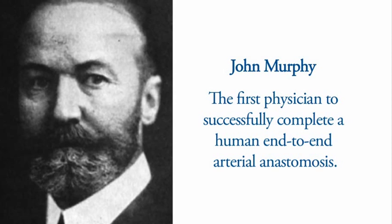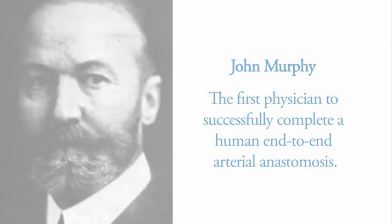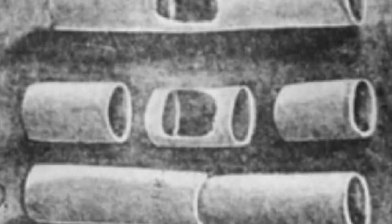In 1897, American physician John Murphy became the first physician to successfully complete a human end-to-end arterial anastomosis. Murphy's technique included resection of the damaged portion of the vessel with invagination of one cut arterial end into the other and partial thickness sutures to hold the vessels in place.